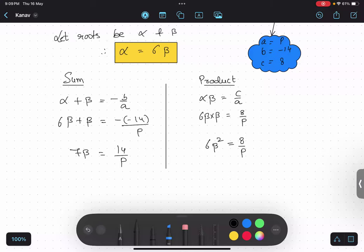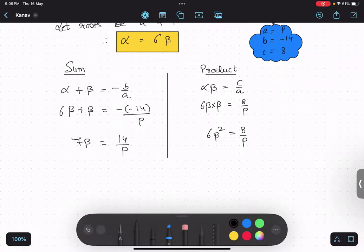Now both the equations have beta and p also. So I can just substitute beta value in this equation and find out. So from here I can calculate beta value as 14 upon p multiplied by one upon seven. Seven and two cancel. Beta value is two upon p.